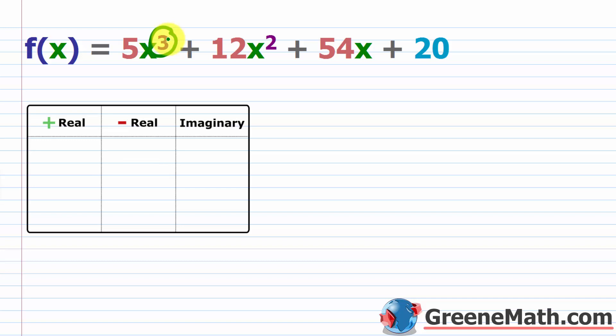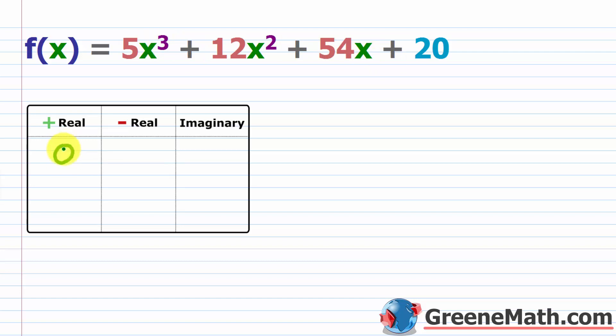We can further break this down by thinking about Descartes' Rule of Signs. You look at the sign changes with f of x. So this is positive, positive, positive, positive — no sign changes in f of x. So there are zero real solutions that are positive.